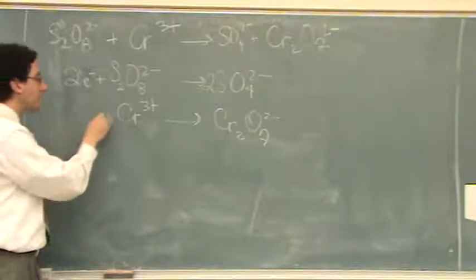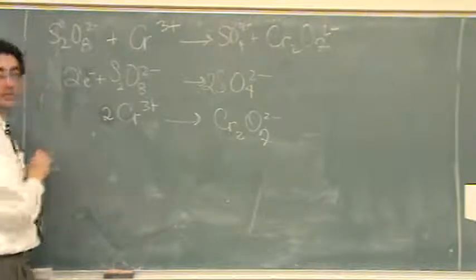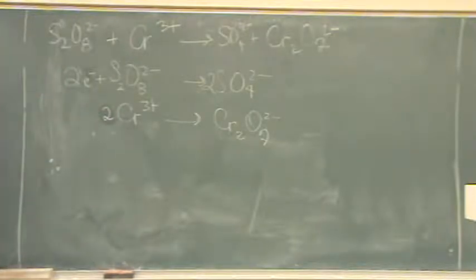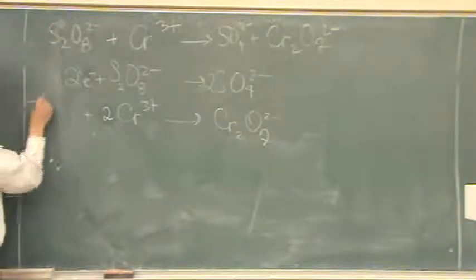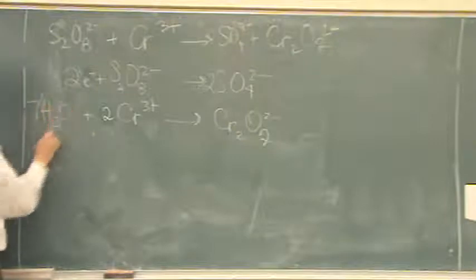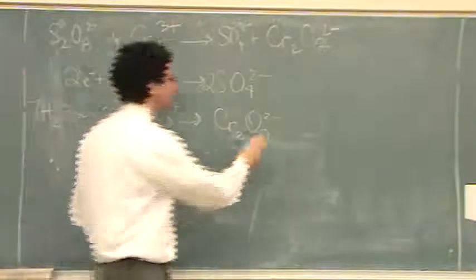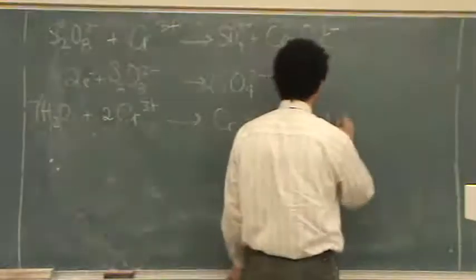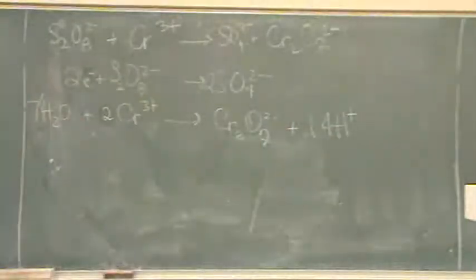Okay, then the chromium. I got to balance the chromium first. That's two. And then I balance the oxygen. There's seven oxygen, so I better put seven waters. And then I balance the hydrogen. There's 14 H's here. And now I've got to balance the charge. This is my last step.